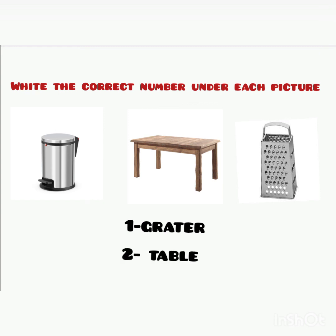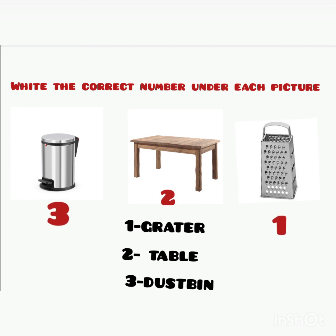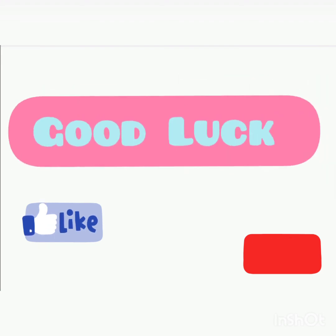Grater — رقم 1. Table — رقم 2. Dustbin — ثلاثة. إذن ما هو رقم الصورة الأولى؟ Good — ثلاثة. الصورة الثانية — إثنان. Table. الصورة الثالثة — واحد. Grater.